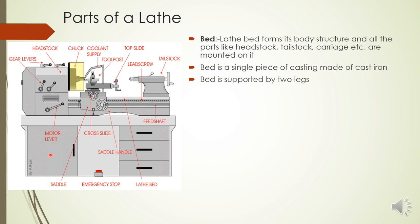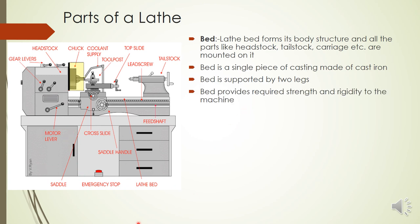The bed is supported by two legs on both sides. It provides the required strength and rigidity to the machine. Since this is high-speed machinery using very high forces to cut, vibrations will occur, and the bed must provide the necessary strength and rigidity to withstand these forces.